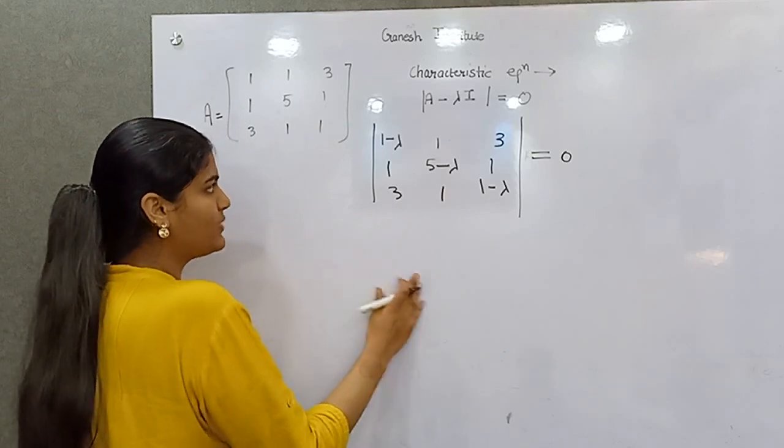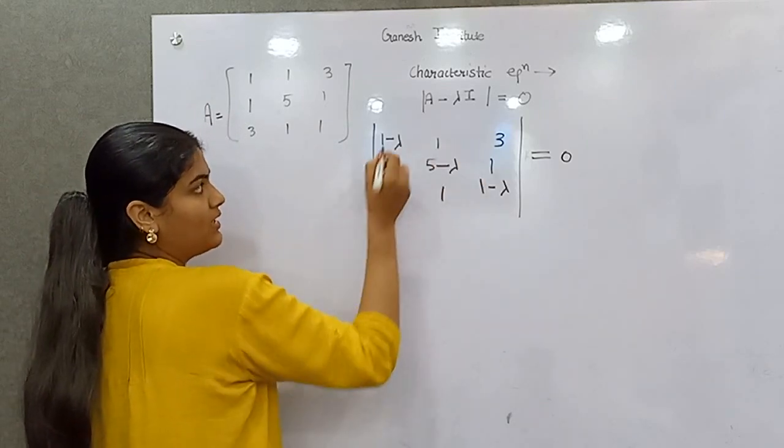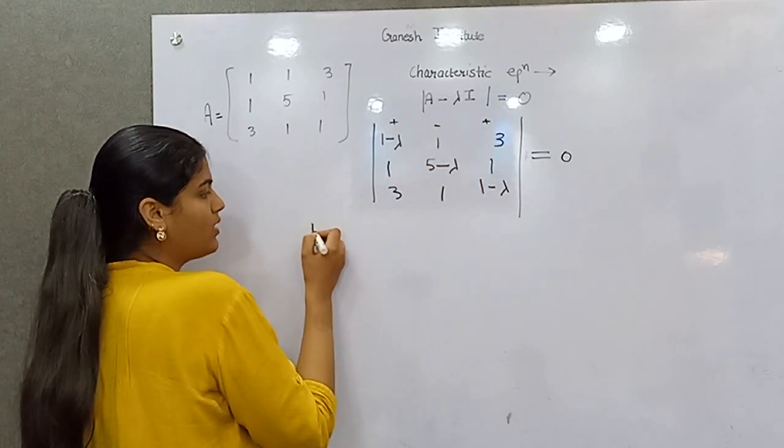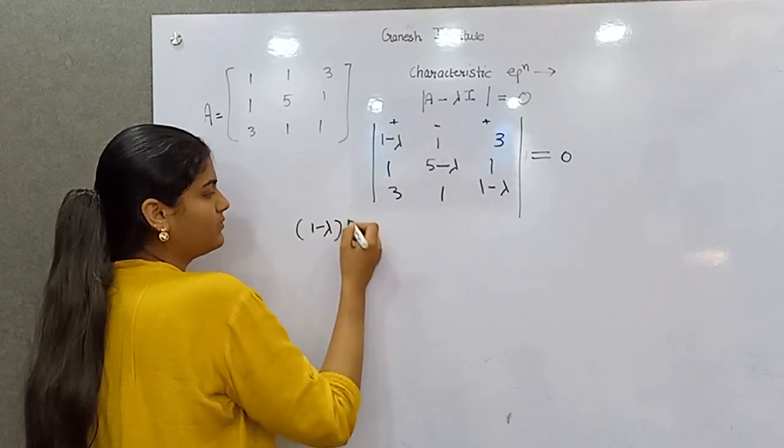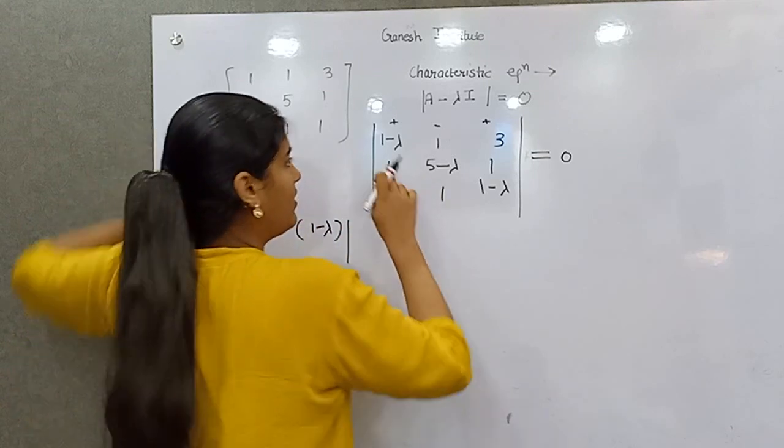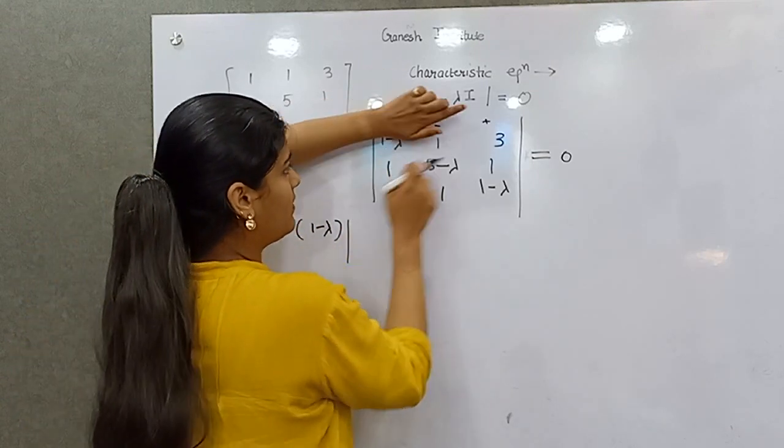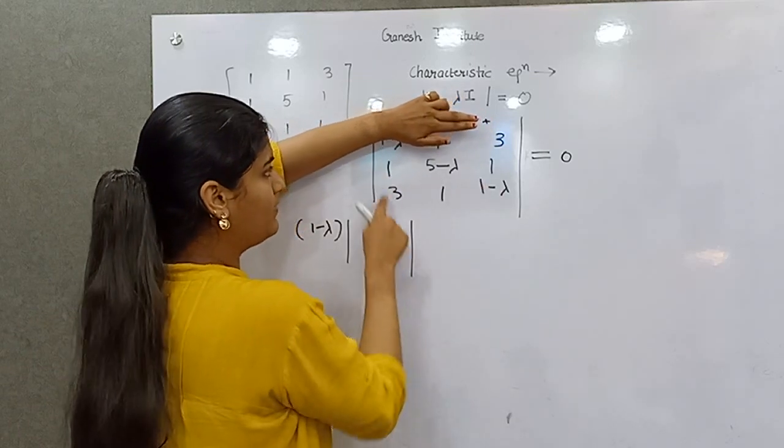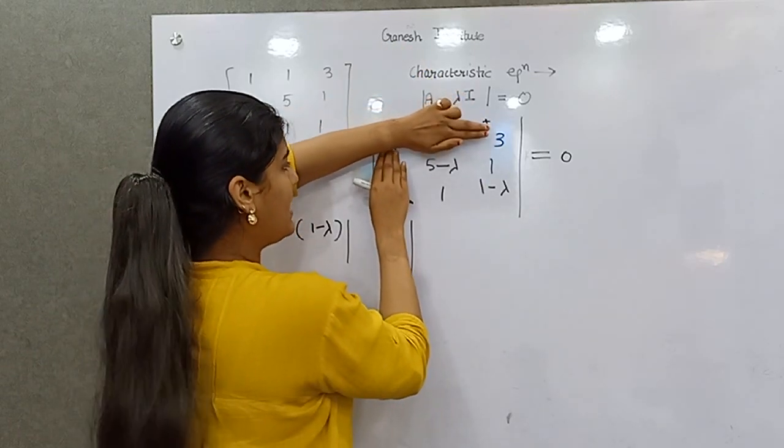So you know how to solve determinant? If not, let me explain. You have to take these three. This will be plus, minus, plus. So 1 minus lambda. When you are taking this value, hide the row and the column in which it exists and take the determinant of the rest: 5 minus lambda, 1, 1 minus lambda.